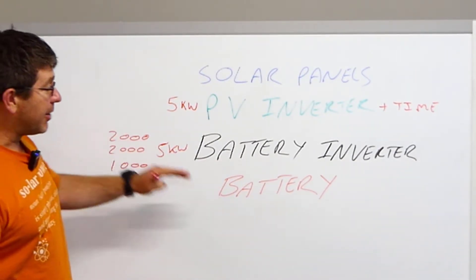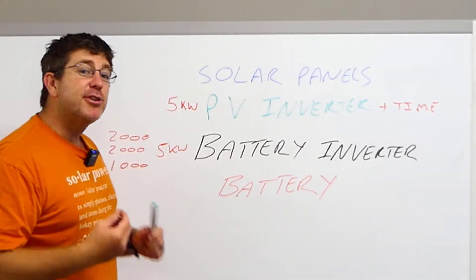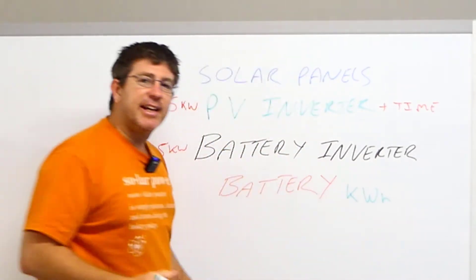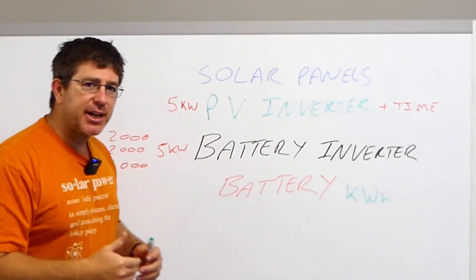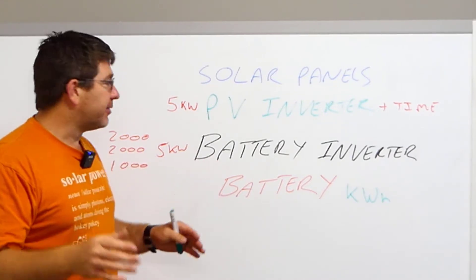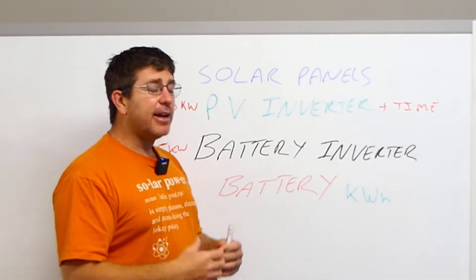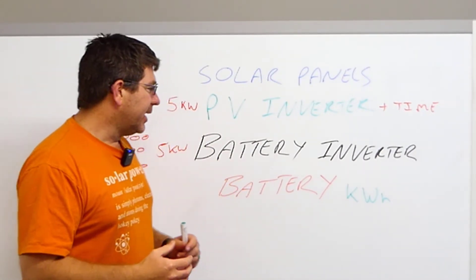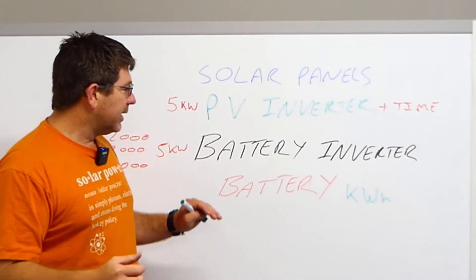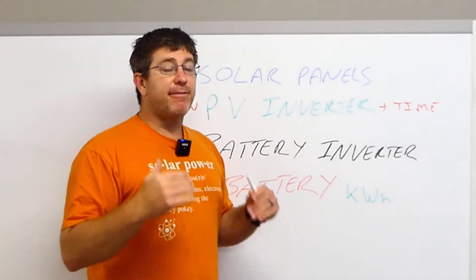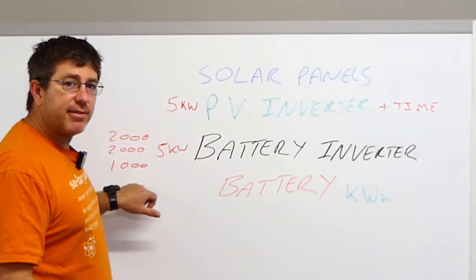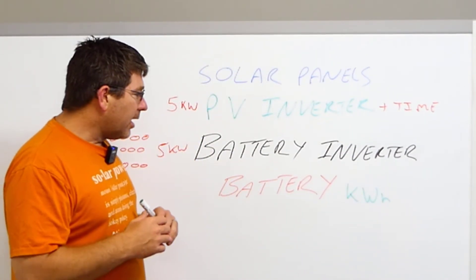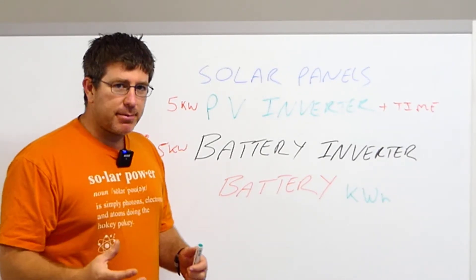A PV inverter and a battery inverter are monitored in kilowatts. Where people get confused with batteries — and this is really important — batteries are measured in kilowatt hours. It's actually how many hours you can pull from the battery, i.e., the time you can use it for. For example, a 14 kilowatt hour battery pack — like a Tesla Powerwall, probably the most common battery installed for grid-connected customers — if you pulled 1,000 watts out of it for 14 hours, you would use your 14 kilowatt hours. That's how batteries are measured.